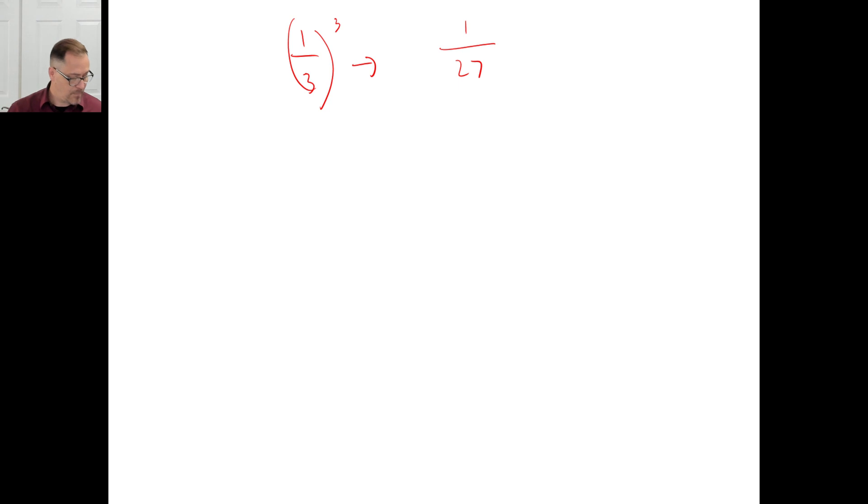All right. Pause it and try B. B is the cube root of one eighth. And again, you're doing the numerator and denominator. What's the cube root of one? One. What's the cube root of eight? Two. The answer is one half. That's all we're just doing. All right. Pause it and try C.